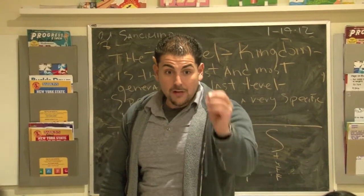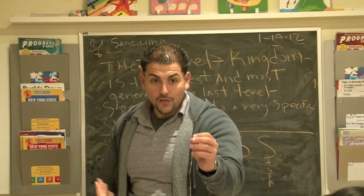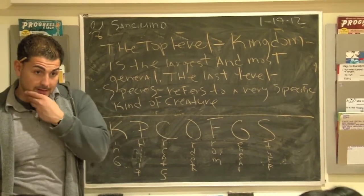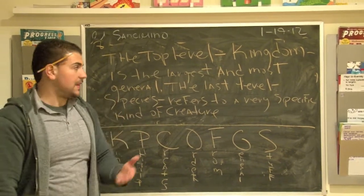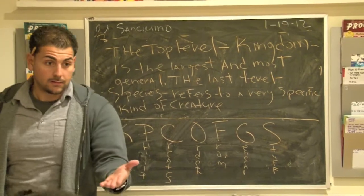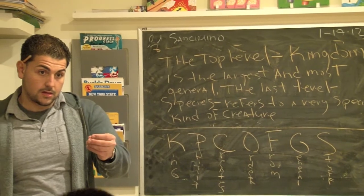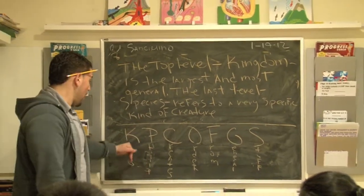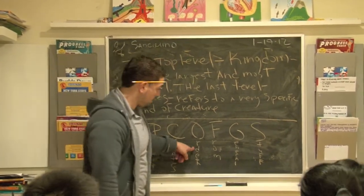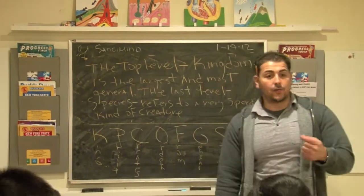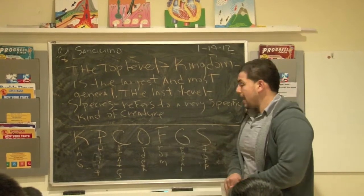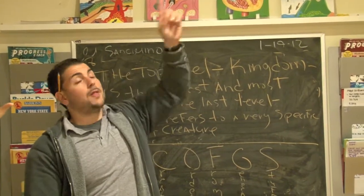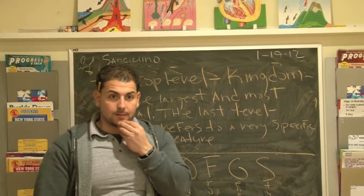What we use this classification for is to help us scientifically classify. For the test, they may ask you what's the difference between kingdom and species. A species is one specific animal, while a kingdom is a very general type — many animals put together. To remember all the different levels, we use the acronym King Philip creates order from general stuff. An acronym helps us remember. Can anybody think of another acronym? There's one for North, South, East, West — Never Eat Soggy Waffles.